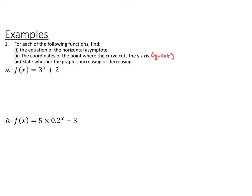For this first example, we're given two functions. For each one, we want to find the equation of the horizontal asymptote, the coordinates of the point where the graph cuts the y-axis — which is the y-intercept — and state whether the graph is increasing or decreasing. You may need your graphing calculator for the last part. Go ahead and pause the video and find those three pieces for both functions.